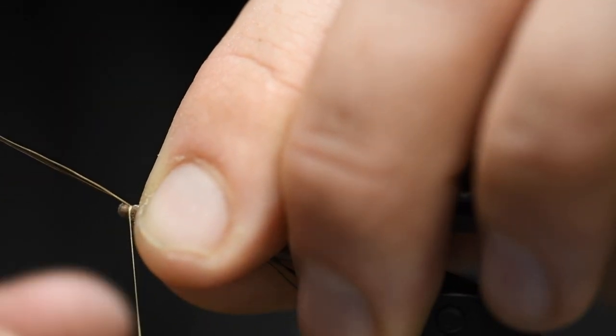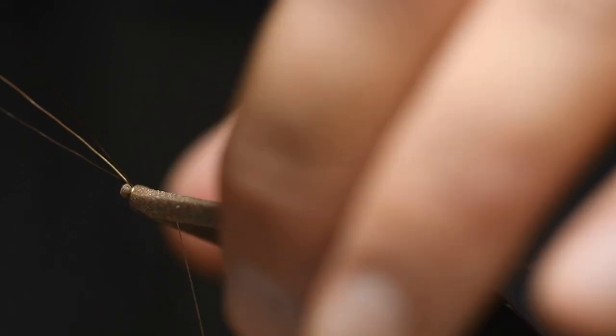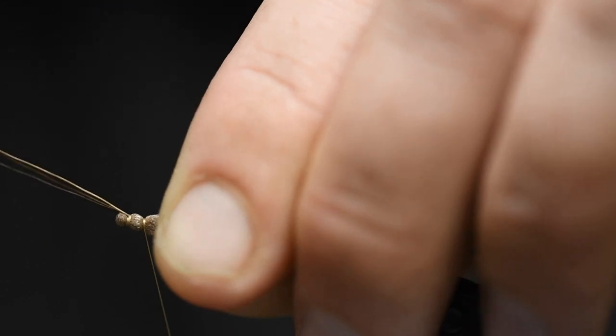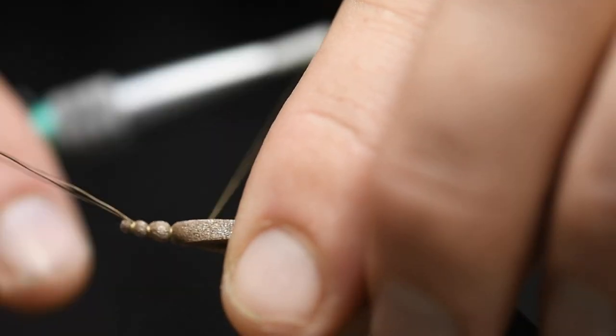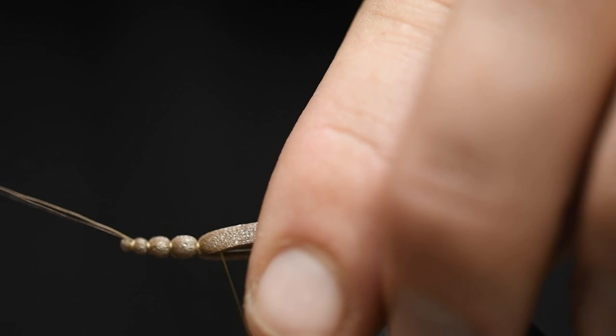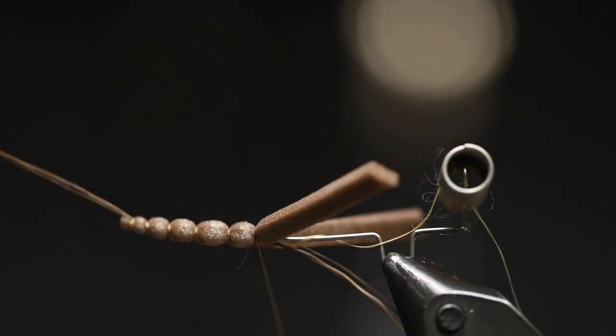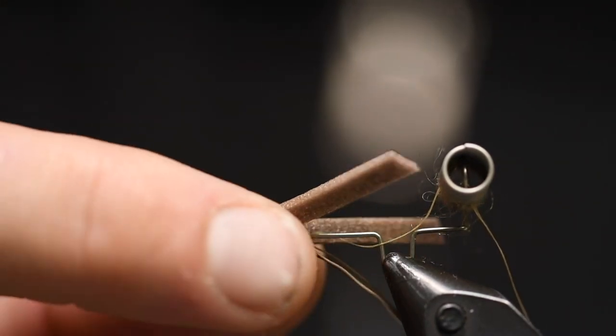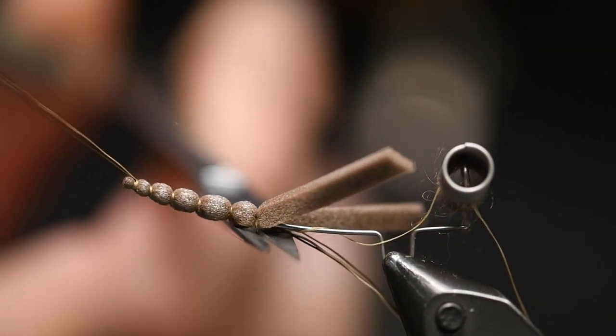You need to make this body tapered. So I will actually cut this off a little bit like this, so you go between, make two wraps in between. And that is about the length I want the body. Then you just make a half hitch over that and cut that off.